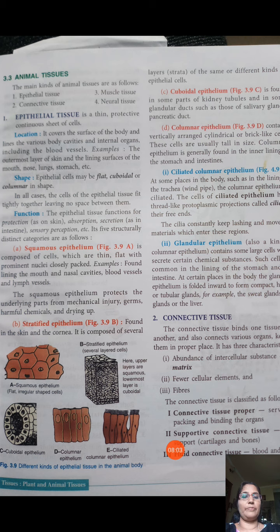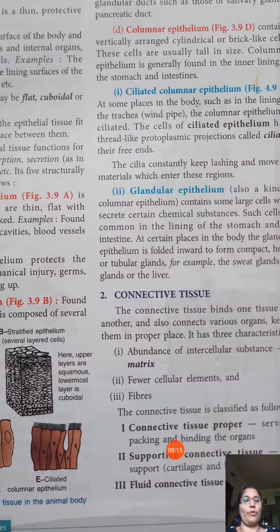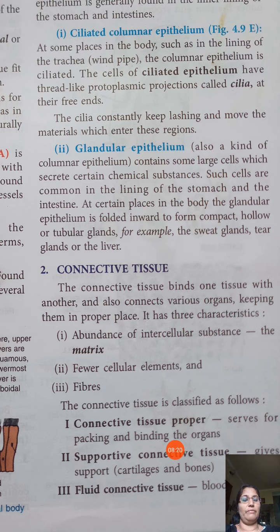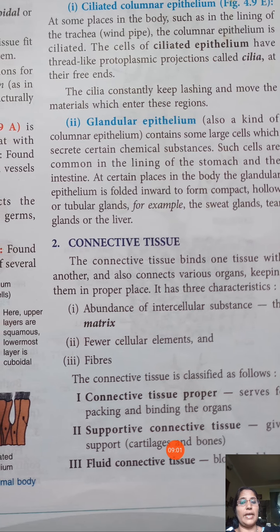The next type is connective tissue, which connects different organs or parts of the body and helps them communicate. Its characteristics include an abundance of intercellular spaces, fewer cellular elements, and fibers — including elastic fiber-like structures. There are three kinds: connective tissue proper, supportive connective tissue, and fluid connective tissue.